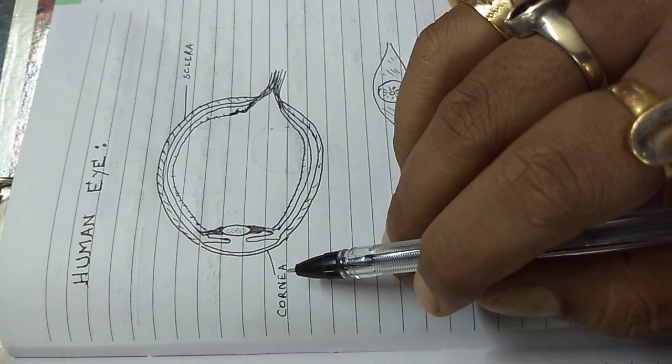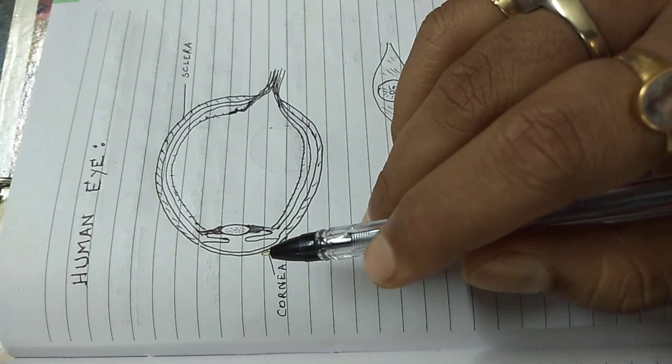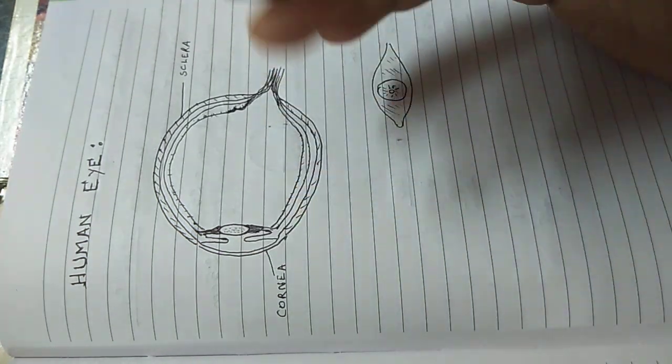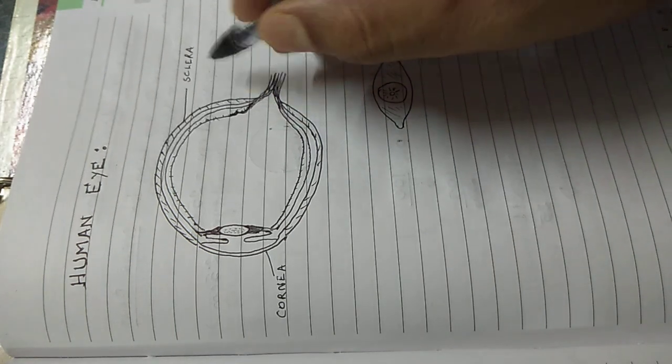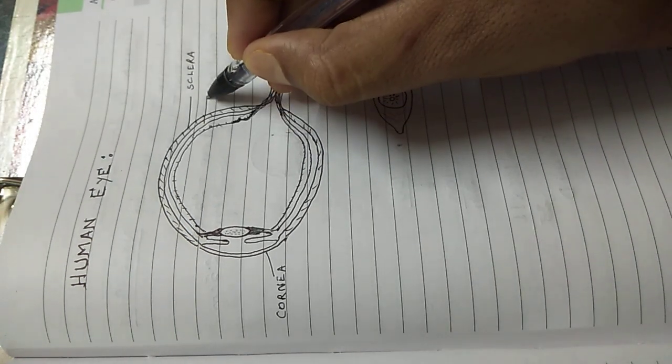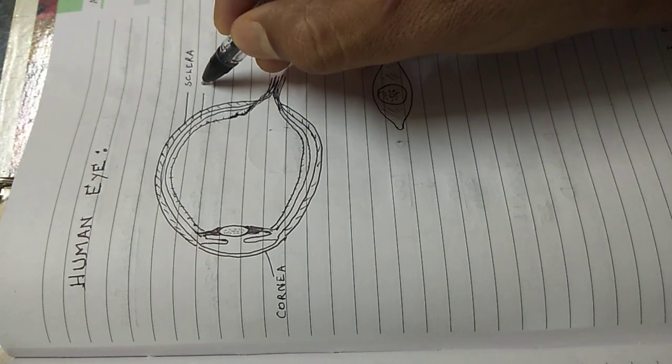Otherwise, if a person dies of any other causes, the cornea can be easily donated because it is not having any blood vessels. After sclera, the second layer of the eye is a much more muscular layer called the choroid.